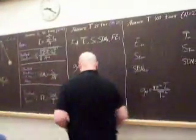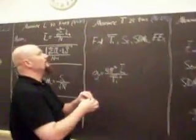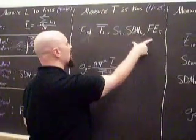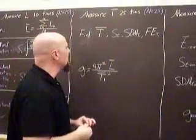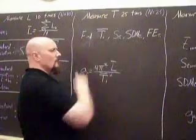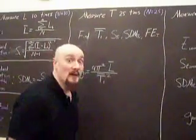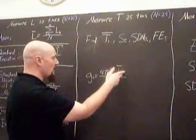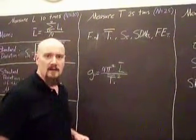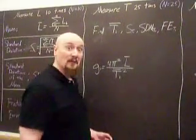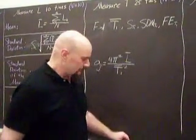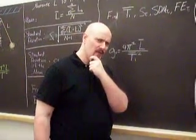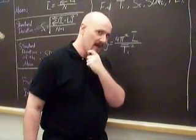For these 25 runs, I find the mean, standard deviation, SDM, and fractional error. Because we're finding these for individual periods, we call this capital T1. So now we can find G1 using the mean for L we found before and the mean of the period we just found. That's our first value for gravity.